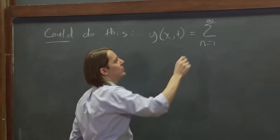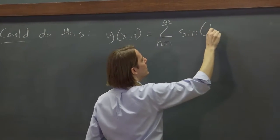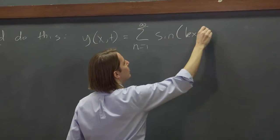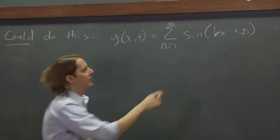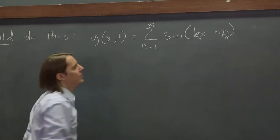but our initial guess, remember, was just a sine kx plus phi. Each one has its own n, right, because we're doing an infinite sum.